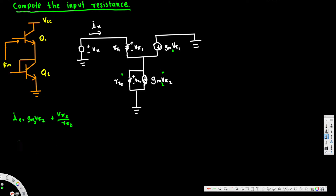The current entering through the other side is also emitter current: gm1·v51 plus v51 over r51. We can simplify these two formulas — taking v52 common gives gm2 plus 1 over r52.